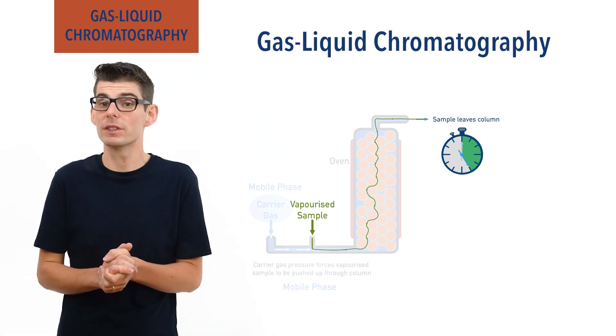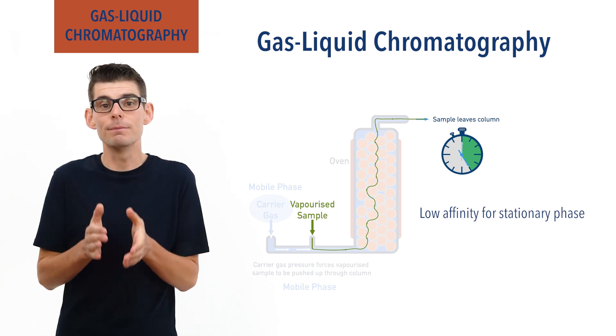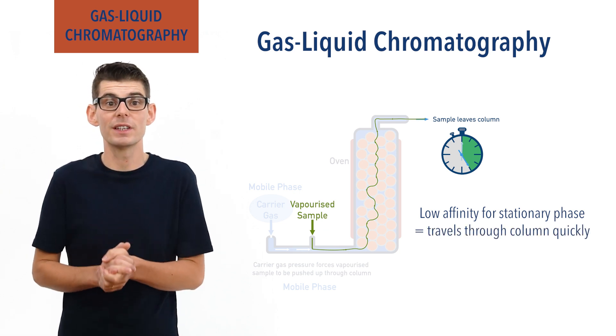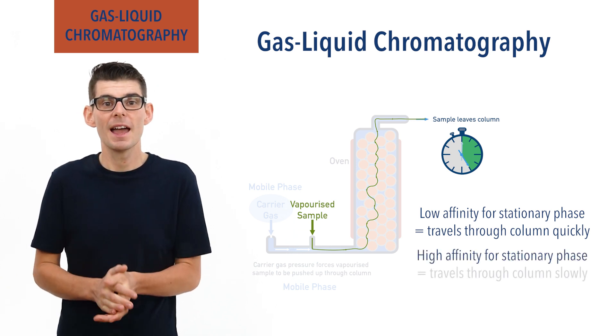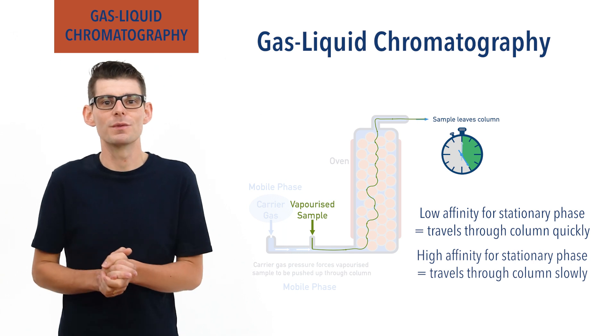Samples with a low affinity for the stationary phase will stay mostly in the mobile phase and move through the column quickly. Samples with a high affinity for the stationary phase will take longer to move through the column as they will spend less time in the mobile phase compared to the stationary phase.